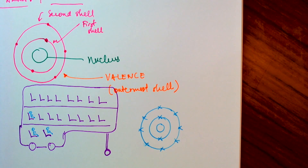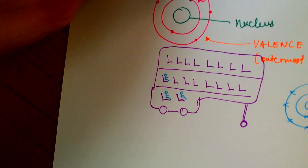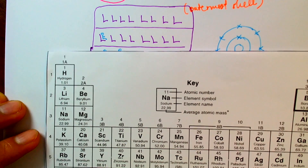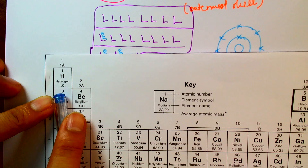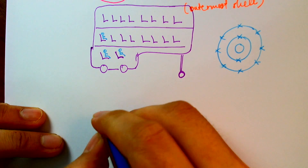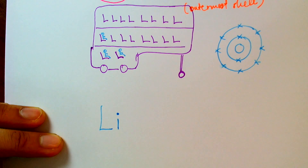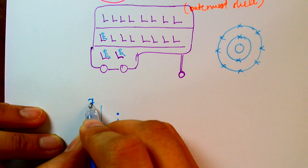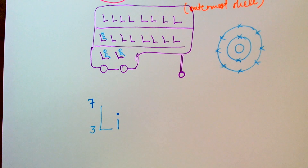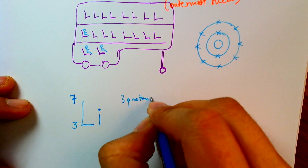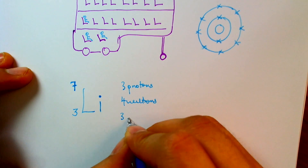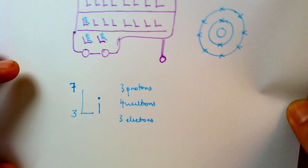Now let's look at some examples from the periodic table to identify this electron arrangement — sometimes called electronic configuration. Let's start with lithium. Lithium has atomic number 3. It has three on the bottom left corner, and this lithium happens to have four neutrons, so the mass number is 7, because the mass number is the number of protons plus neutrons. So this lithium has 3 protons and 4 neutrons. Since it has 3 protons, it also has 3 electrons so that it's neutral.